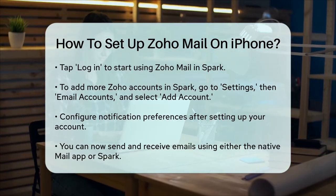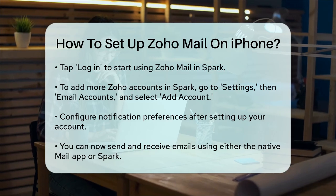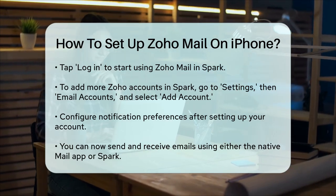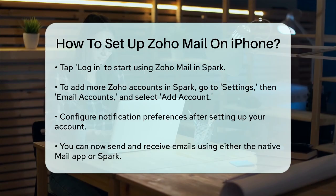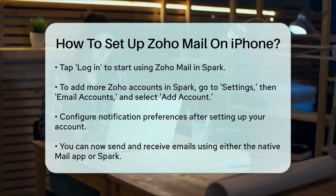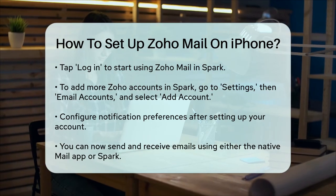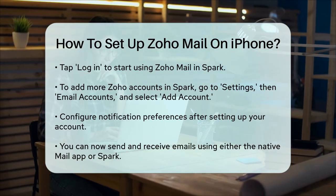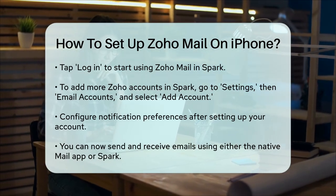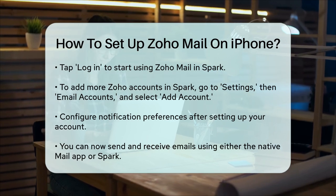Final steps. Regardless of which method you choose, once you've set up your Zoho Mail account, you'll be able to access your emails on your iPhone. Make sure to configure any notification preferences as needed. With these steps, you should now have your Zoho Mail account fully set up and ready to use on your iPhone. Whether you're using the native Mail app or Spark, you'll be able to send and receive emails seamlessly.